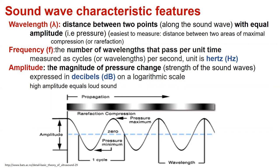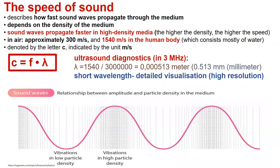High amplitude equals loud sound. The speed of sound describes how fast sound waves propagate through the medium and depends on the density of the medium. Sound waves propagate faster in high-density media. In air, the speed of sound is approximately 300 meters per second, and in the human body, which consists mostly of water, it's 1,540 meters per second.